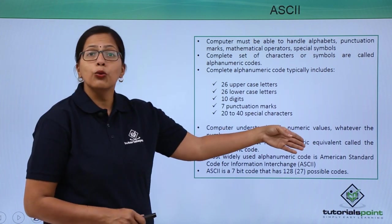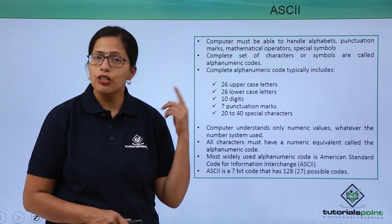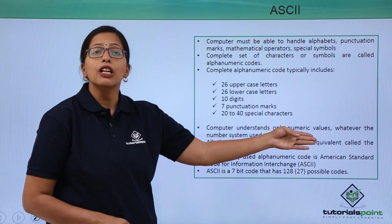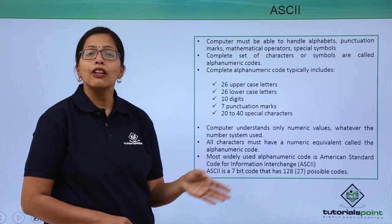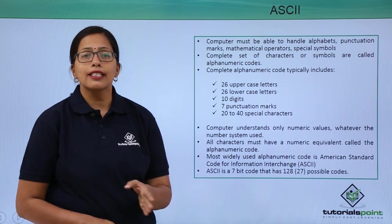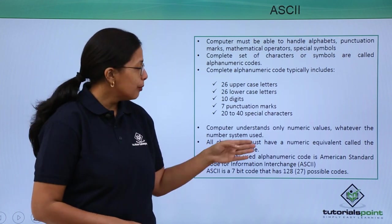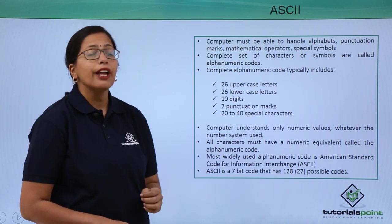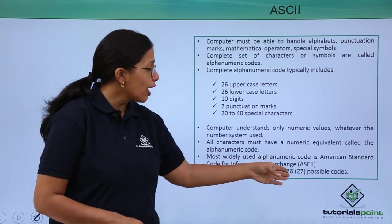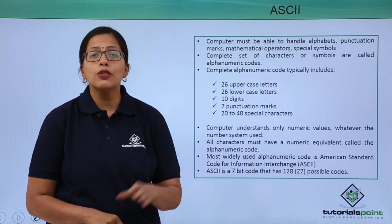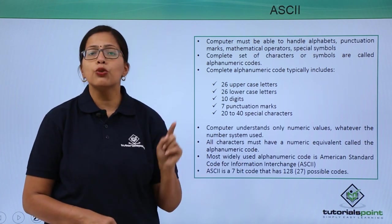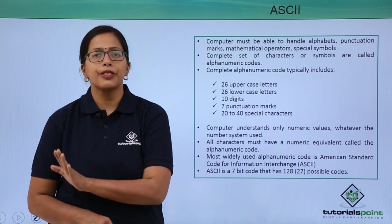The computer understands only numeric values, so all characters must have a numeric equivalent, which is called the alphanumeric code. The most widely used alphanumeric code is the ASCII code — A-S-C-I-I — American Standard Code for Information Interchange. ASCII is a 7-bit code that has 128 possible codes, because 2 to the power of 7 equals 128.